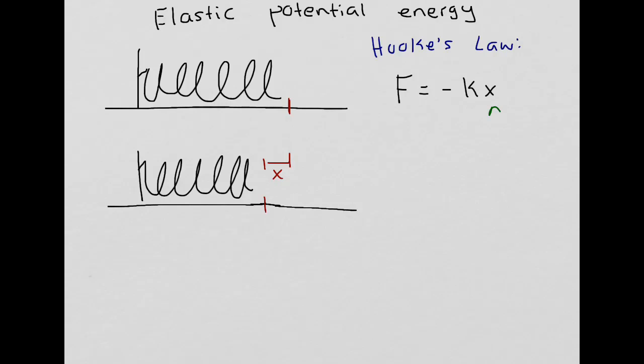So x is distance from your equilibrium point. In the case of this example, this was x. F is your force, and k is the spring constant.